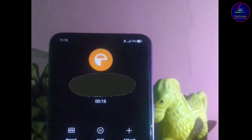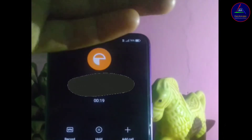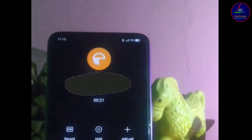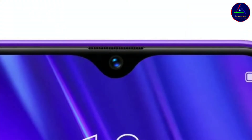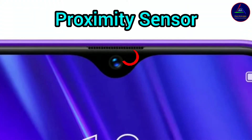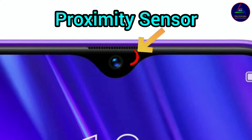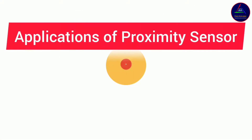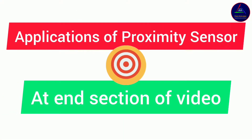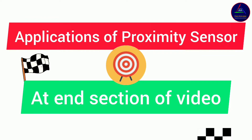For example, a face or ear can touch the screen and it can lead to unnecessary actions. The majority of smartphones available in the market have a proximity sensor usually placed at the top near the camera. Proximity sensors have other roles too, which are discussed in the later section of the video.